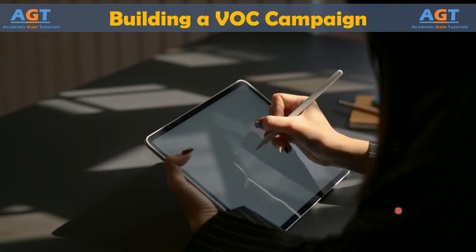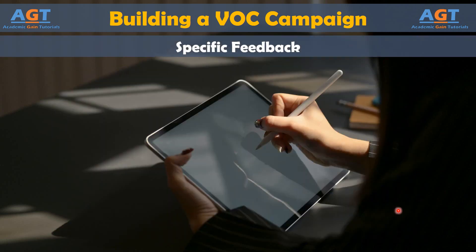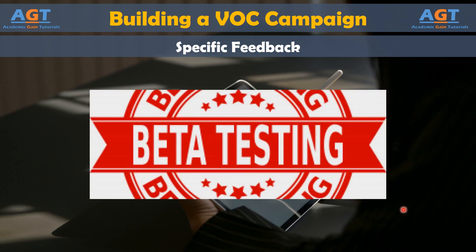Sometimes organizations want feedback that is specific to a problem, product, or idea. The same tools used in general feedback campaigns can be used in specific campaigns, but you can also tailor the voice of the customer tool to the need. If you want feedback about a new app, you could use a beta test. If you want to test a product, idea, or marketing campaign, an in-person or online focus group might be best. For specific feedback, you have to ask specific questions — this is especially true if you are seeking additional information or clarification of general feedback.